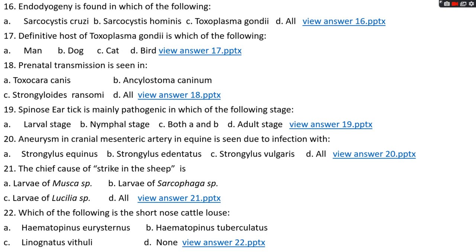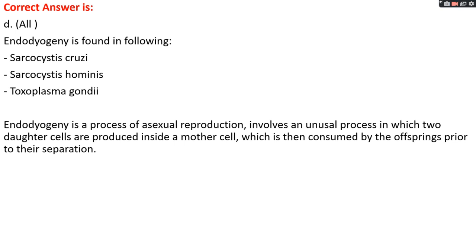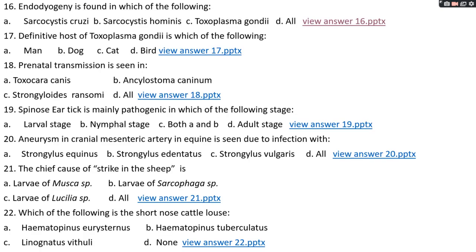Question number sixteen: endodyogeny is found in which of the following? Options A, Sarcocystis cruzi; options B, Sarcocystis hominis; option C, Toxoplasma gondii; options D, all. The right answer is option D, all. Endodyogeny is found in Sarcocystis cruzi, Sarcocystis hominis, and Toxoplasma gondii. Endodyogeny is a process of asexual reproduction involving an unusual process in which two daughter cells are formed inside a single mother cell; the mother cell is then consumed as the two daughter cells are released. In schizogony, many daughter cells are formed.